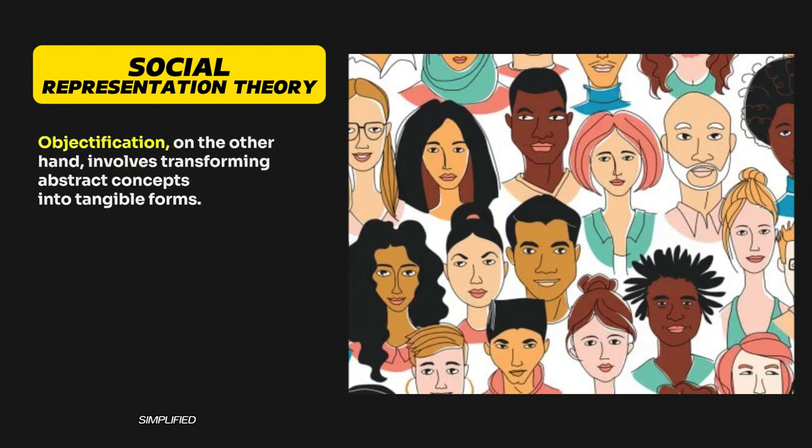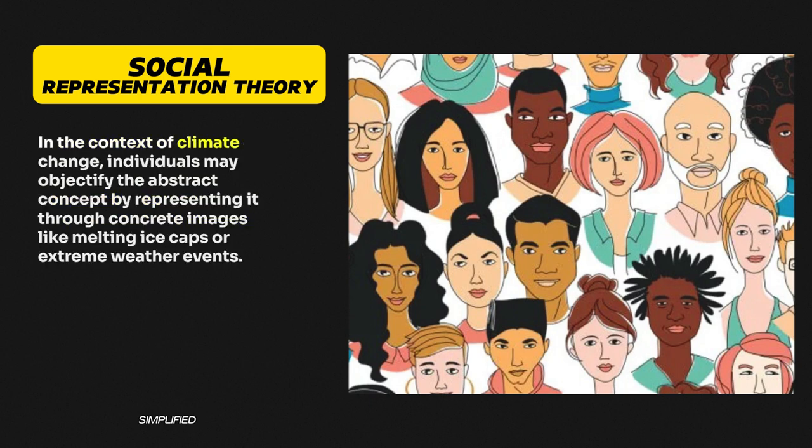Objectification, on the other hand, involves transforming abstract concepts into tangible forms. In the context of climate change, individuals may objectify the abstract concept by representing it through concrete images like melting ice caps or extreme weather events.